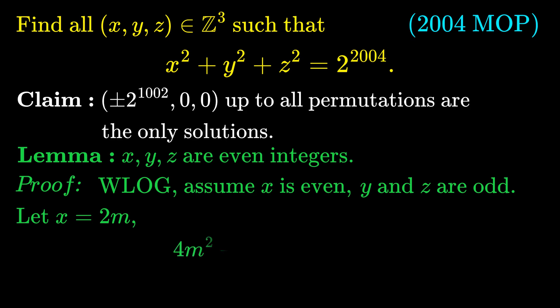The right-hand side will be 0 mod 4, but the left-hand side, 4m squared, is congruent to 0 mod 4, and since y and z are odd, y squared and z squared are congruent to 1 mod 4. But this gives 2 is congruent to 0 mod 4, which is a contradiction. Hence, we must indeed have x, y, and z to be even integers, which proves our lemma.